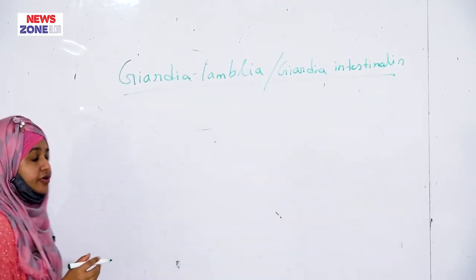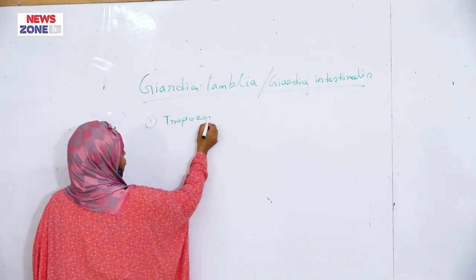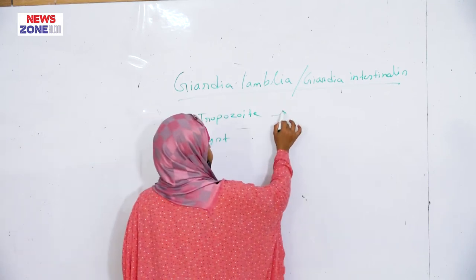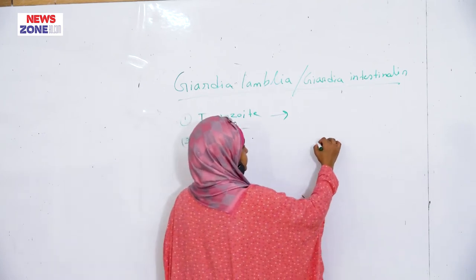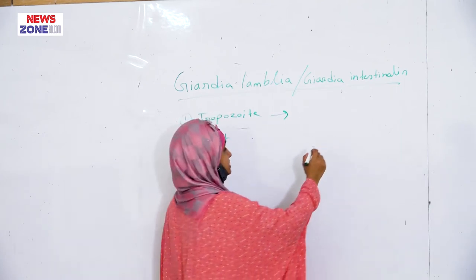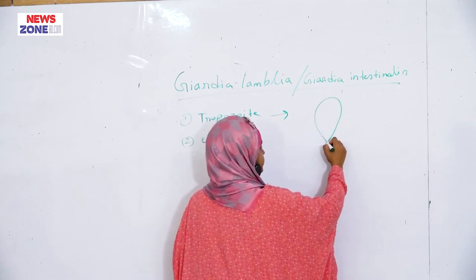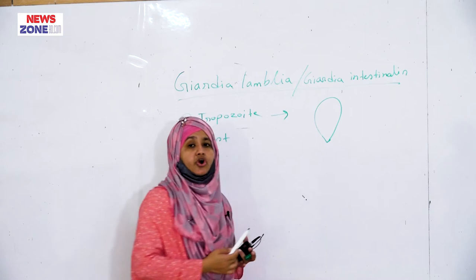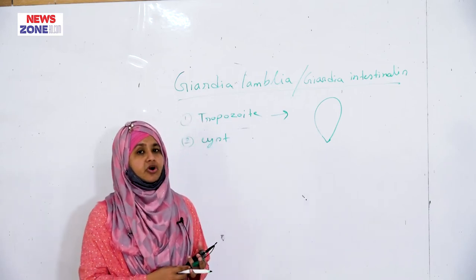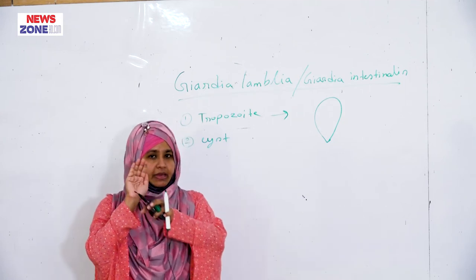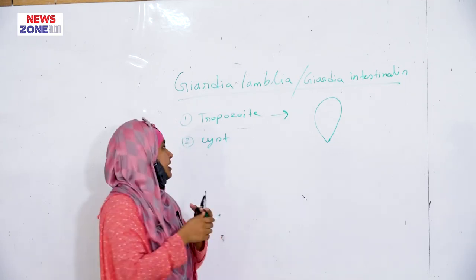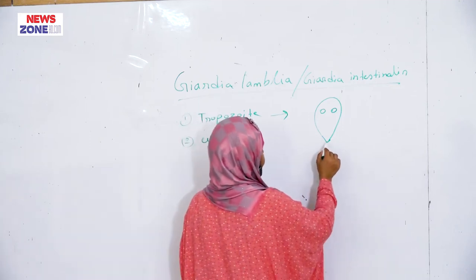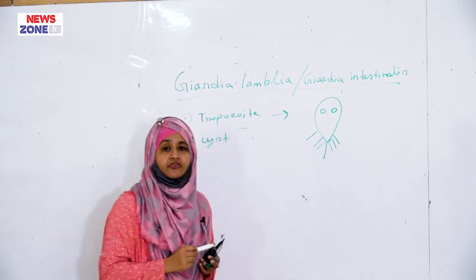The two morphological forms are trophozoite and cyst. Cyst is the infective form. The trophozoite of Giardia lamblia is tennis racket shape, bilateral symmetrical. Its ventral surface is concave and dorsal surface is convex. There is one pair of nucleus and four pairs of flagella.